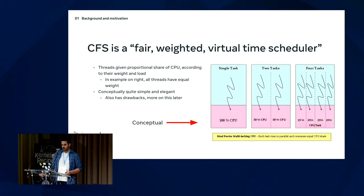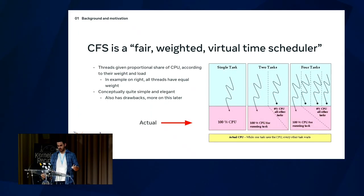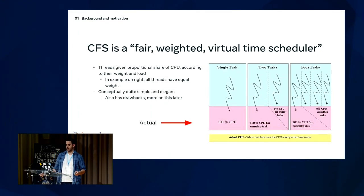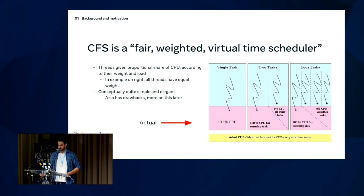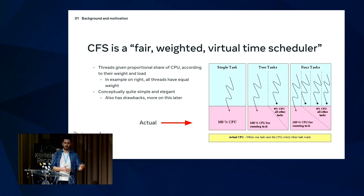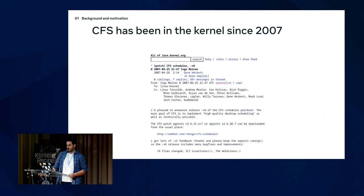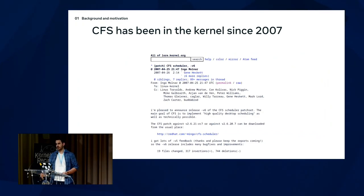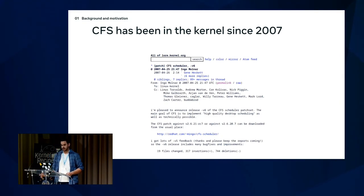In reality, one task runs on the CPU at a time and the others are sitting waiting to use it — that's called run queue latency. There's overhead in switching between tasks and deciding which gets to run next. CFS is great — it's been around a very long time, added to the kernel back in 2007.